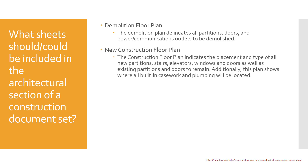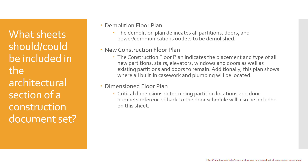There's always a new construction floor plan indicating the placement of all new partitions — meaning walls — stairs, elevators, windows, doors, and anything that's going to remain in a remodel. This plan also shows where all built-in casework and plumbing is going to be located. A dimension floor plan shows the critical dimensions needed to determine where walls and doors are going to be actually installed. Door schedules can be included on this sheet but are often kept separate since floor plans — especially dimension plans — need to be large so you can read the dimensions.